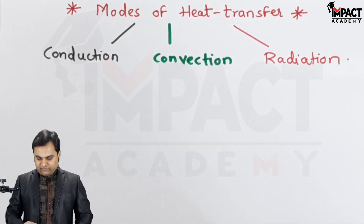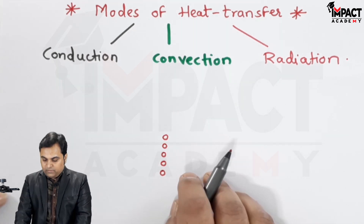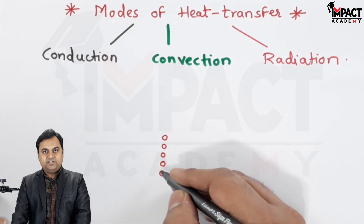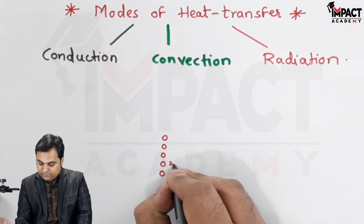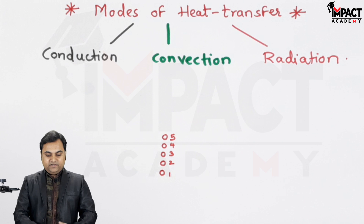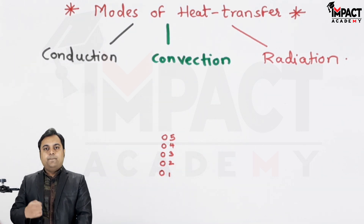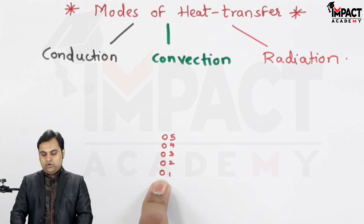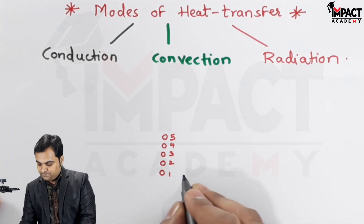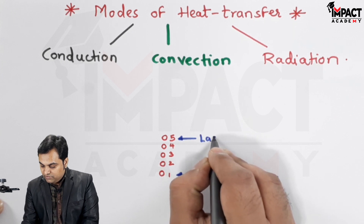To explain the concept of conduction, convection, and radiation, I'll give a rough example. Suppose there are five students standing in a straight line — first, second, third, fourth, and fifth. I'll use this example to explain all three modes. Here is the first student and here is the fifth, or last, student.